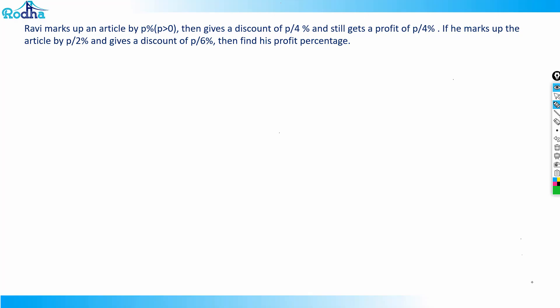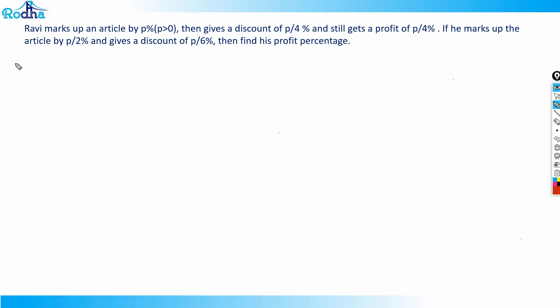Let's look at this question. Ravi marks up an article by P percent, gives a discount of P/4 percent, and still gets a profit of P/4 percent. If he marks up the article by P/2 percent and gives a discount of P/6 percent, then find his profit percentage.